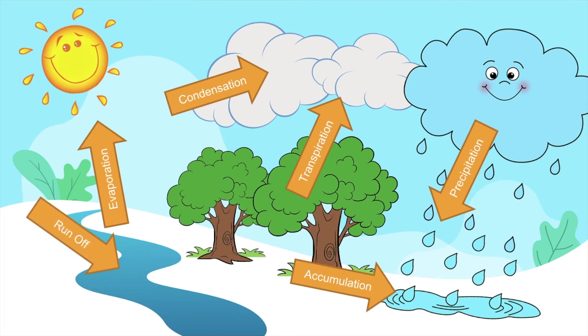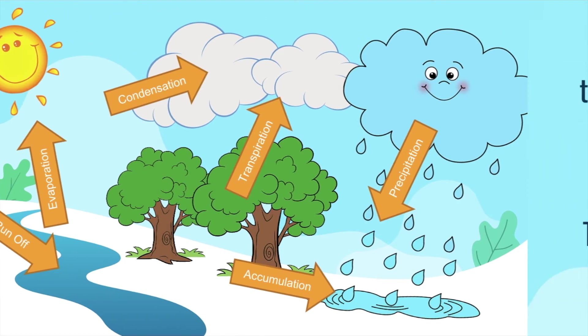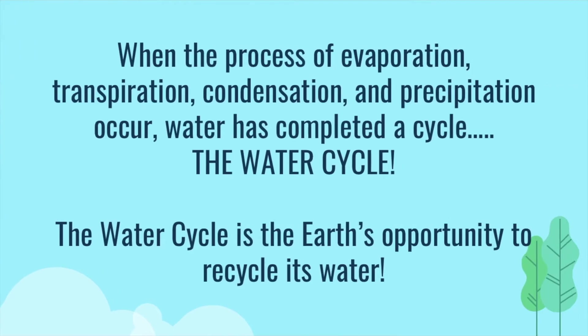And of course, we see runoff as it makes its way back to our oceans. When the processes of evaporation, transpiration, condensation, and precipitation occur, water has completed a cycle — the water cycle. The water cycle is the earth's opportunity to recycle its water.